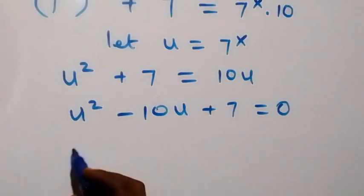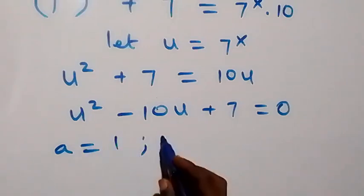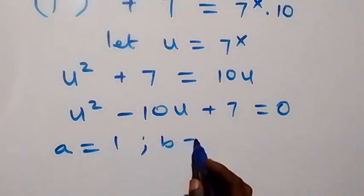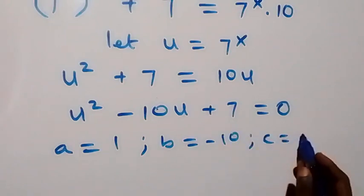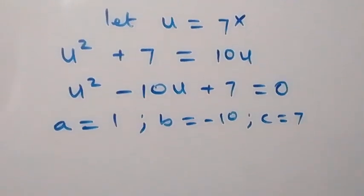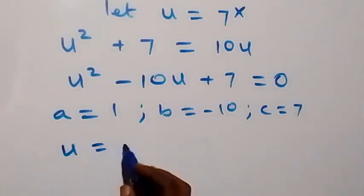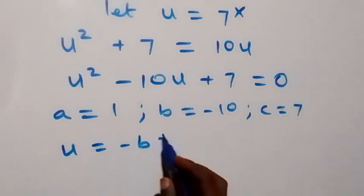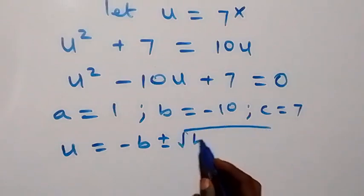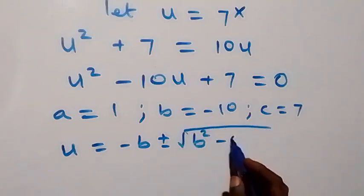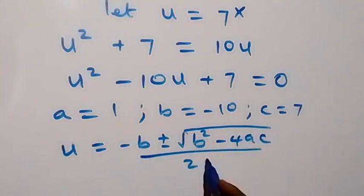We have a quadratic equation here where a equals to 1, b equals to minus 10, and c equals to 7. From the quadratic formula: u equals to minus b plus or minus square root of b squared minus 4ac, all over 2a.